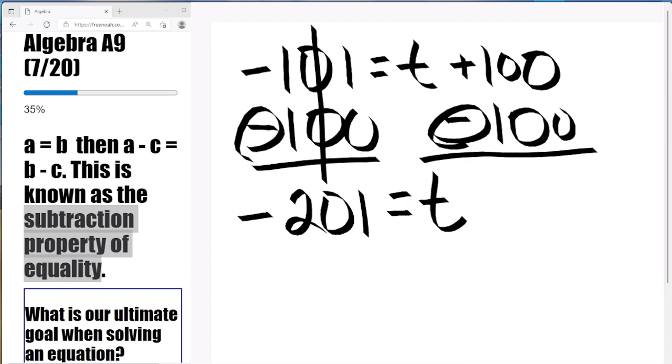Once again, this is the subtraction property of equality. If you notice on the right side how we use the subtraction property of equality to cancel out the positive 100.